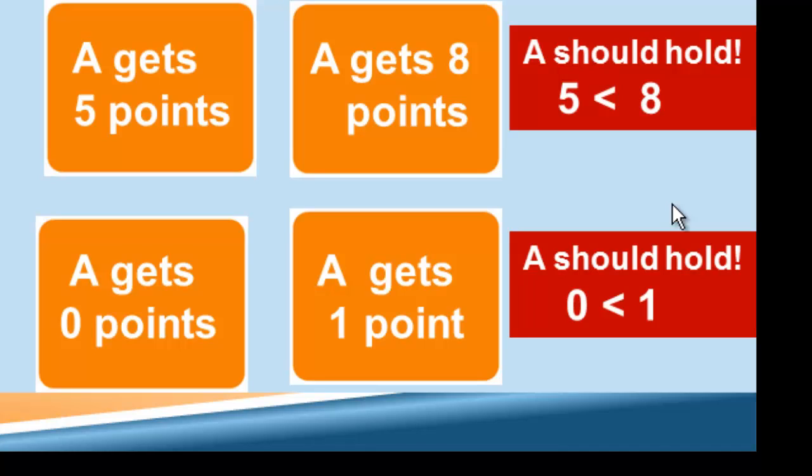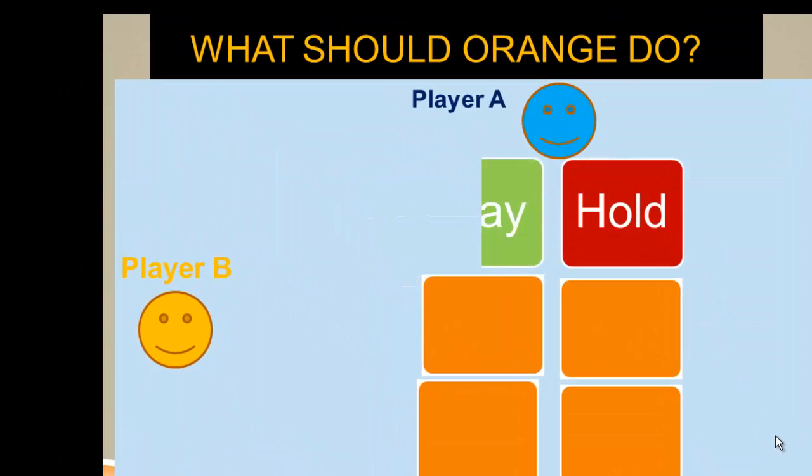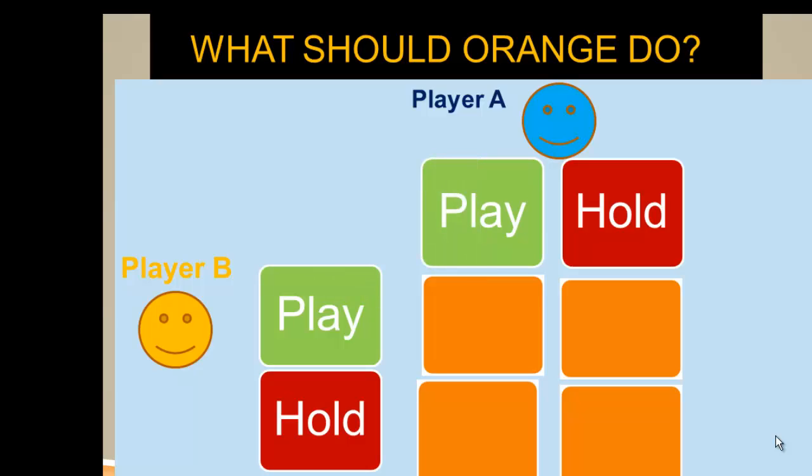So the blue player, player A, should always hold their card. What should orange do? Well, orange is in the same situation. Orange knows the options that are open to A and that they're the same as her own options.